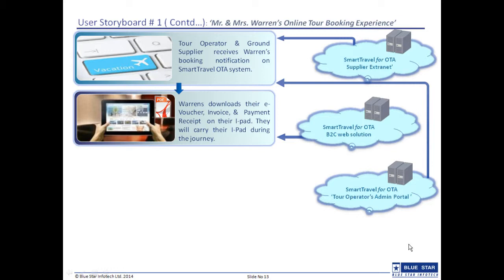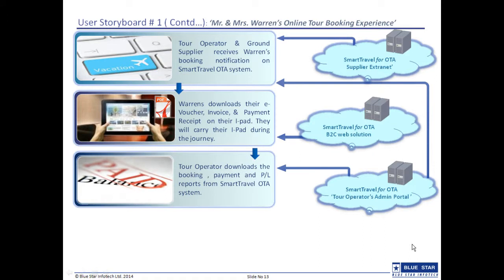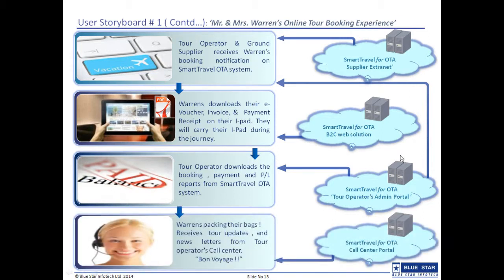The Warrens plan on carrying their iPad during their journey, so they download their e-vouchers, invoices and payment receipts onto their iPad. In the backend, the tour operator makes use of the Smart Travel OTA system to download booking, payment as well as profit and loss reports. The Warrens then receive tour updates and a newsletter from the tour operator's call center, and they are finally ready to take off for their romantic Christmas celebration.